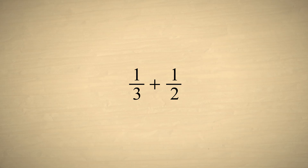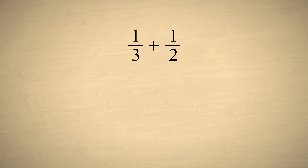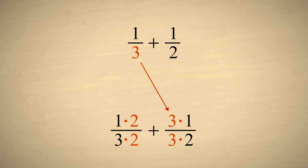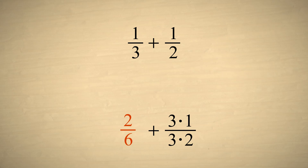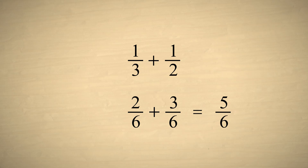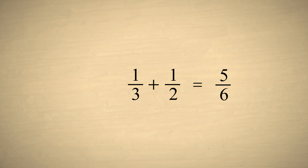When adding or subtracting two fractions, the simplest way to create a common denominator is by multiplying the numerator and denominator of each fraction by the other fraction's denominator. In our example, both the numerator and denominator of the fraction one-third were multiplied by two — the denominator of one-half — and the numerator and denominator of one-half were both multiplied by three, the denominator of one-third. So we multiplied the top and bottom of each fraction by the other fraction's denominator. This gave us two-sixths plus three-sixths, which is five-sixths. So one-third plus one-half equals five-sixths.